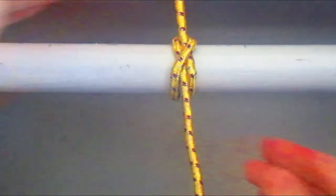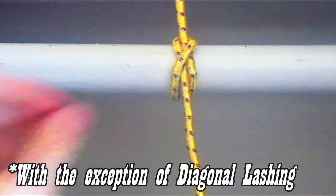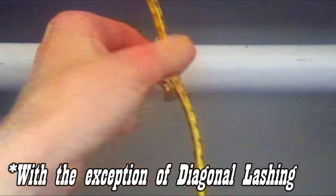This is the Clove Hitch. It is the starter knot to all lashing, which again is a merit by itself.